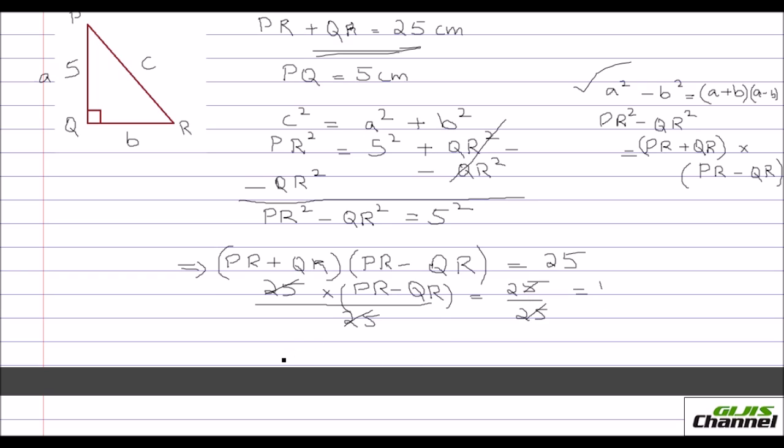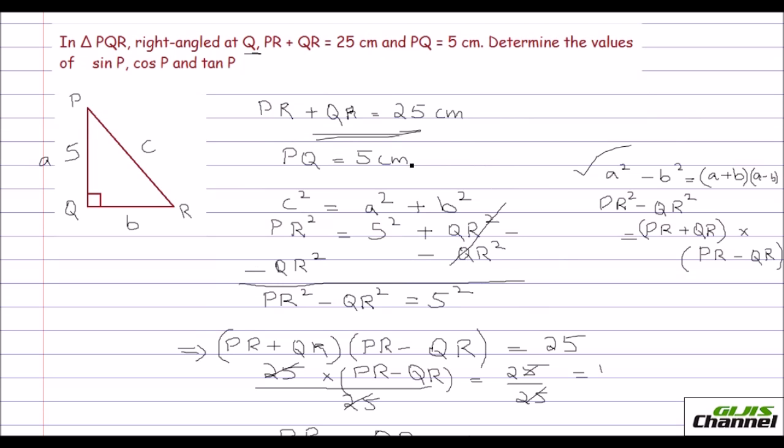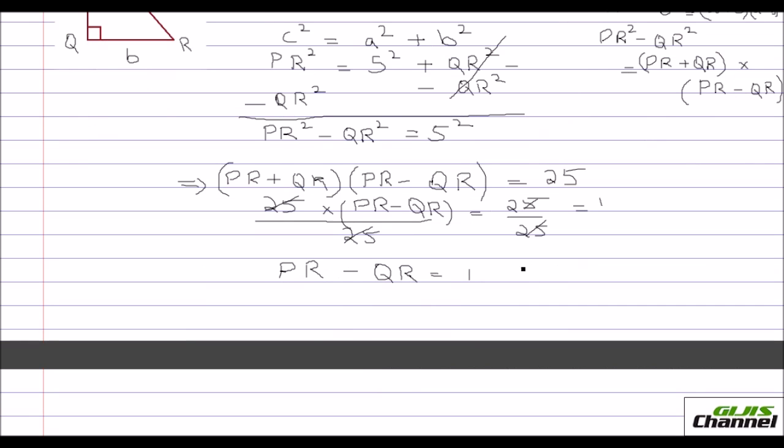So finally you have got PR minus QR equals 1. Now the first value which they have given you, I take it as equation 1. That is PR plus QR equals 25. I take it as equation 1 and this one which I found out now, I take it as equation 2. Now using the simultaneous equation, we are going to find out what is PR. So as per equation 1, you have PR plus QR equals 25 and the second equation.